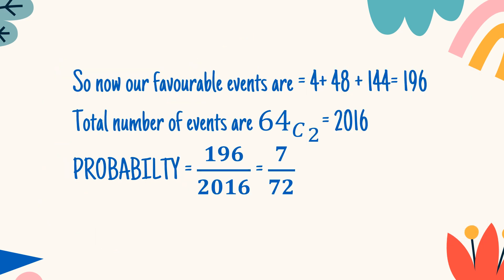Next, favorable events: 4 plus 48 plus 144. These three we calculated in the previous slides. The total comes out to be 196. Total number of events are 64C2, which equals 2016. So what will be the probability? It will be 196 divided by 2016. The answer is 7 upon 72. Thank you.